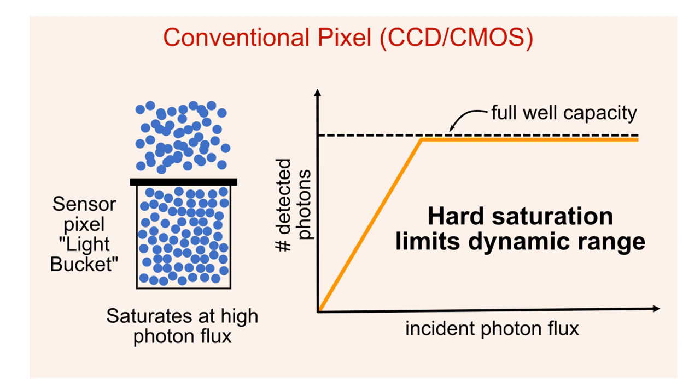beyond which it saturates and can no longer capture additional photons. More formally, let's make a plot of the number of photons captured as a function of scene brightness, as shown here on the right. As the scene brightness increases, the pixel output increases linearly until it hits the full well capacity and the pixel saturates.